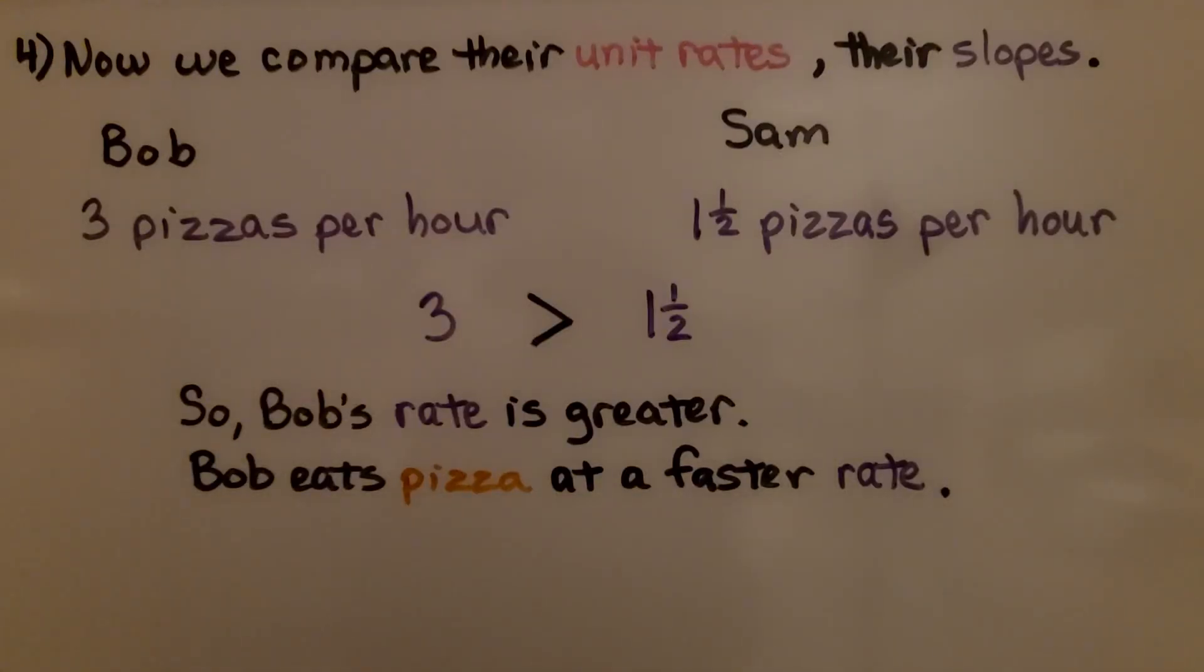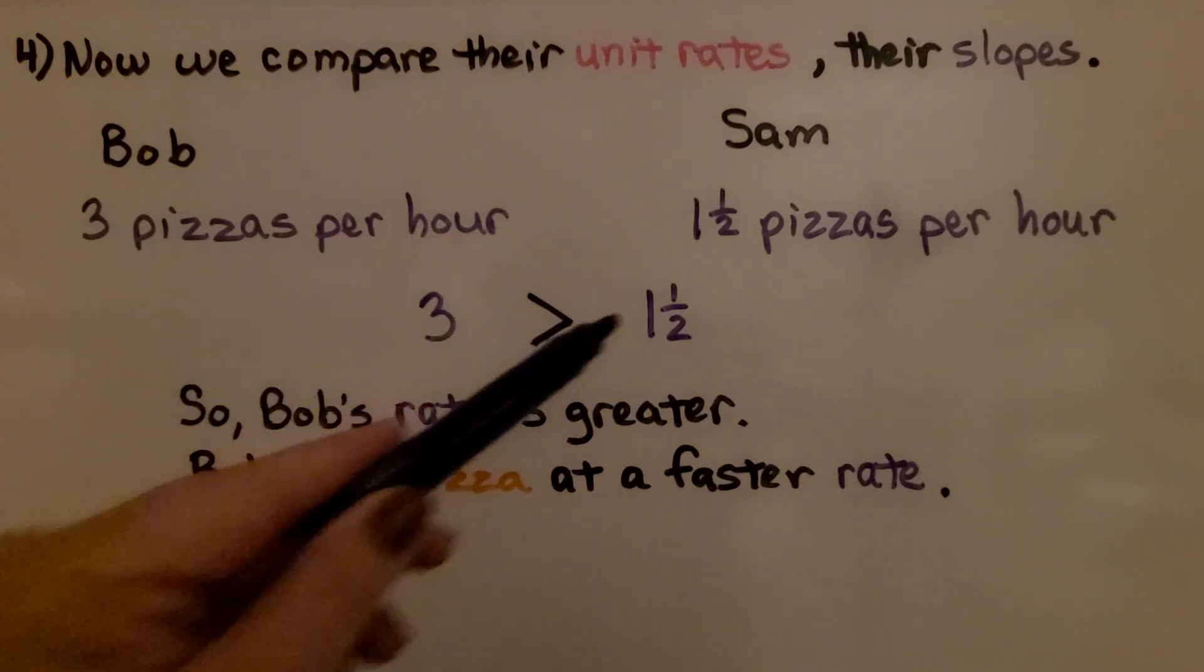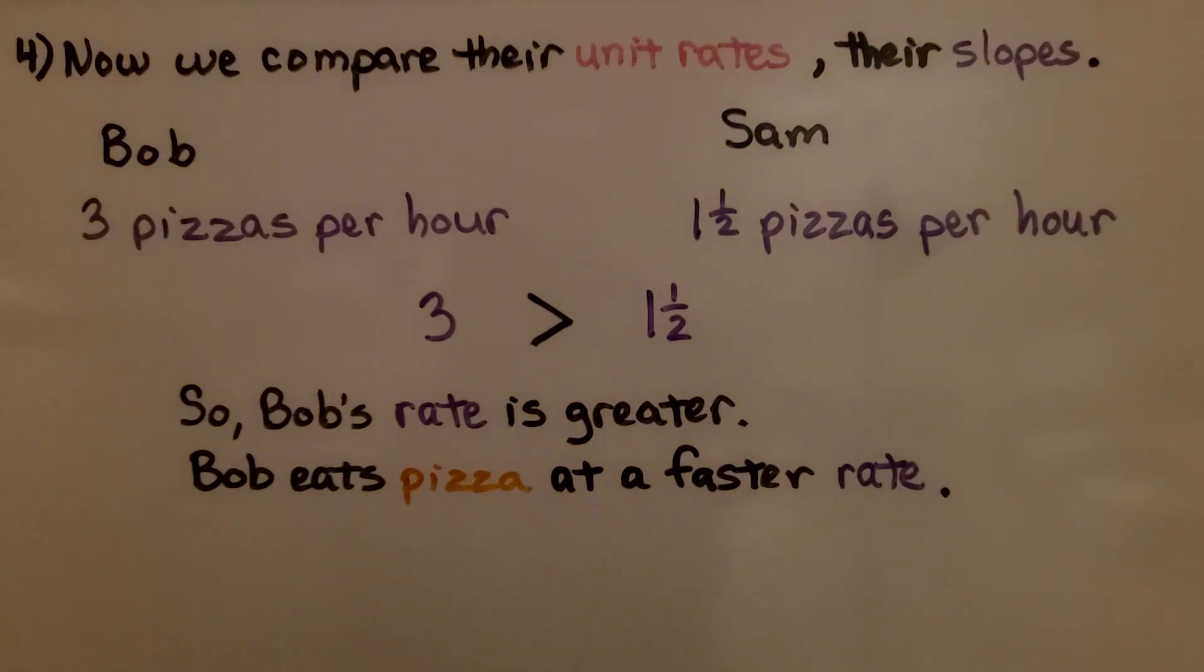We compare their unit rates, their slopes. Bob eats 3 pizzas per hour. Sam eats 1 and a half pizzas per hour. 3 is greater than 1 and a half, so Bob's rate is greater. Bob eats pizza at a faster rate.